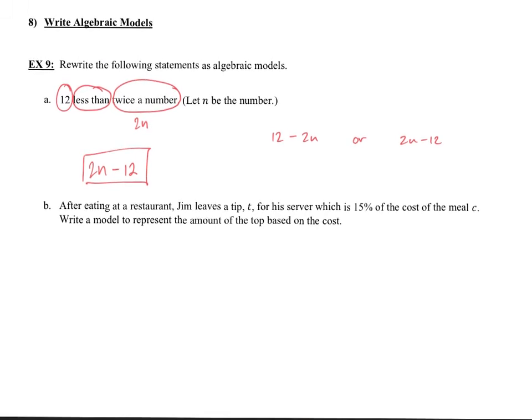Last part. After eating at a restaurant, Jim leaves a tip for his server, which is 15% of the cost of his meal C. Write a model to represent the amount of tip based on the cost. What we want to find is what the tip is going to be, based on how much he spent. What we know is that his tip is 15% of the cost. This is where we're going to go ahead and use our translation skills for mathematics. One of the main things to know is 'is' is the English word for the equal sign. And then 15%, in math that's pretty much the correct thing, but I'm going to go ahead and turn that into a decimal. We can't have a percent in an equation.